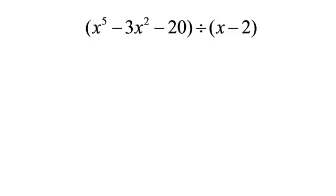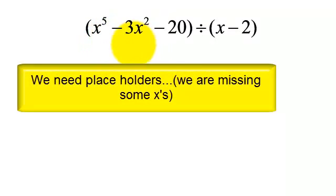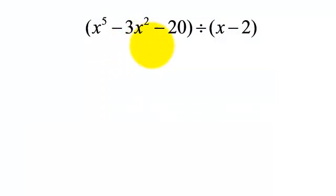We have the problem x to the 5th minus 3x squared minus 20 divided by x minus 2. I am going to use long division to do this problem, but notice something. I see the x to the 5th, but I do not have x to the 4th or x to the 3rd. Then I see x squared, and I do not have an x to the 1st. Then I see minus 20. I need some placeholders here.